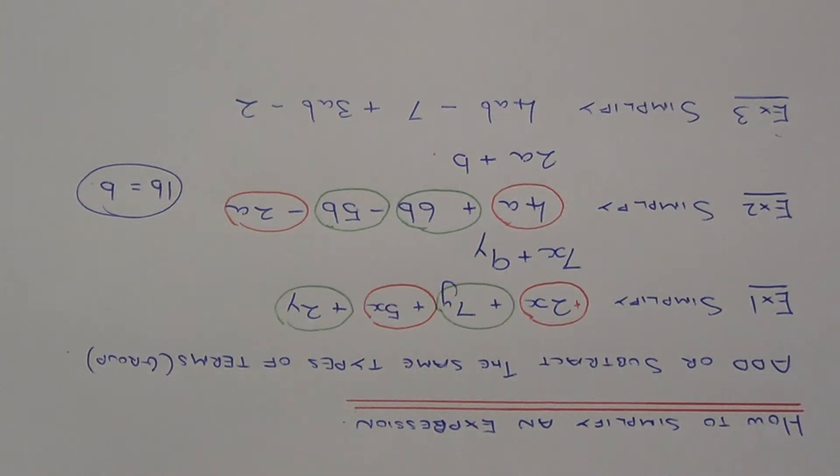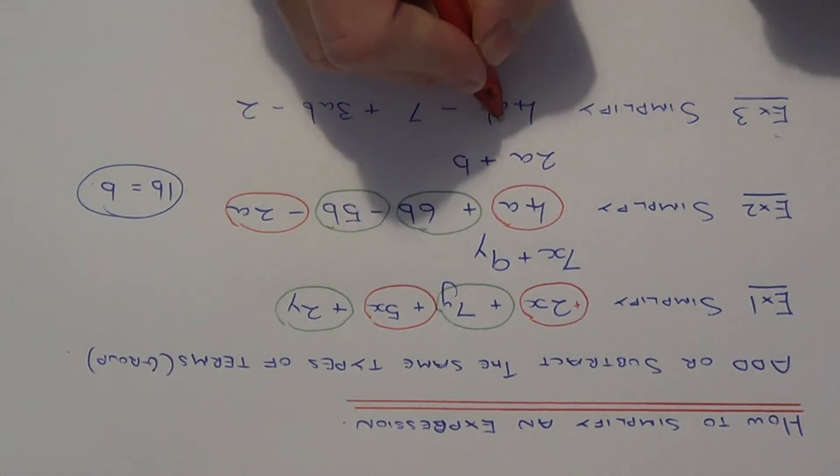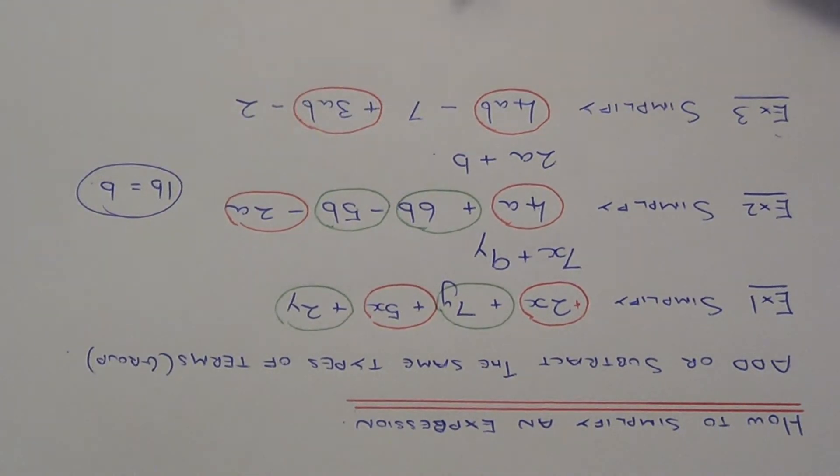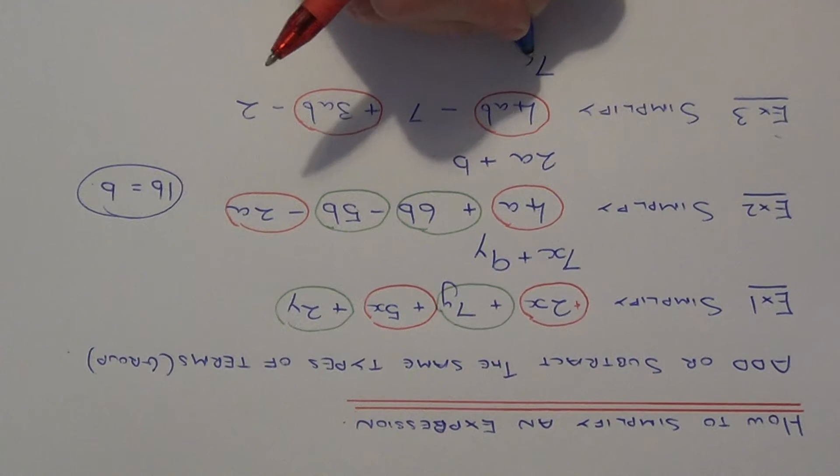So in our final example, we need to simplify 4ab minus 7 plus 3ab minus 2. So again we've got 4 terms. We've got some ab terms and we've got some number terms. So let's go with the ab terms first of all. We've got plus 4ab plus 3ab, so that gives 7ab.